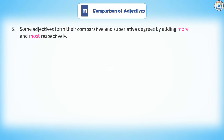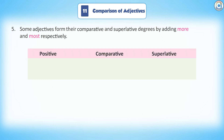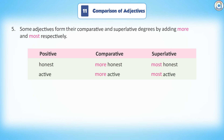Some adjectives form their comparative and superlative degrees by adding 'more' and 'most' respectively. For example: Honest, more honest, most honest. Active, more active, most active.